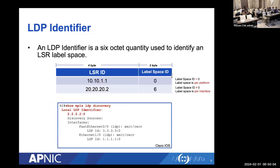Similar to routing protocols, each LDP router has a unique LDP identifier — a 6-octet quantity containing a 4-byte LSR ID and a 2-byte label space ID. The LSR ID is typically the router's loopback interface address. A zero label space ID indicates per-platform label space; non-zero means per-interface. In Cisco IOS, the LDP identifier can be shown with 'show mpls ldp discovery' — it is like the router ID of a routing protocol.